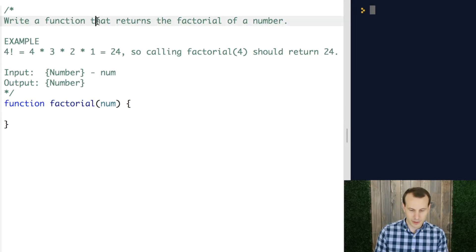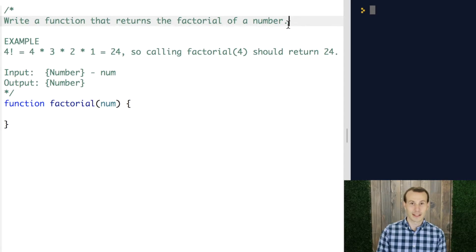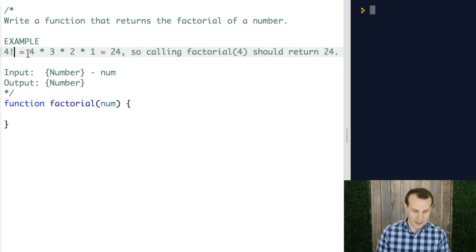So it says here, write a function that returns the factorial of a number, which if you recall from math class, is the number itself with an exclamation point. That exclamation point, also called a bang in programming, is the factorial symbol. And so, we would take that 4.